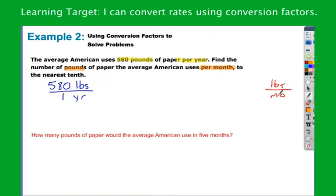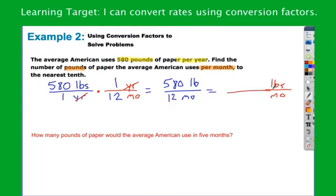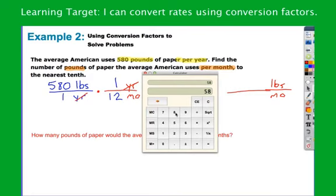That conversion factor gets rid of years and brings in months. To get rid of years, I put it in the numerator since it starts in the denominator. I fill the hole in the denominator with months — I now have pounds per month. One year is 12 months. No numbers are put in until I have the labels right. 580 times 1 is 580; 1 times 12 is 12. So the average American uses 580 pounds in 12 months. In one month, 580 divided by 12 gives 48.3 pounds per month.